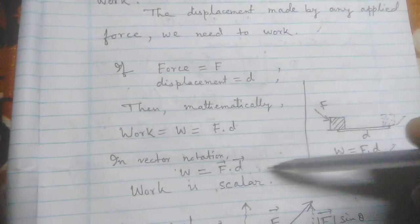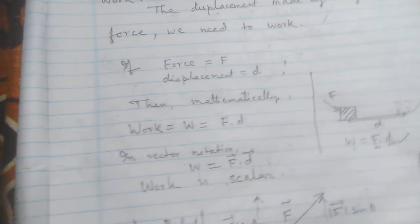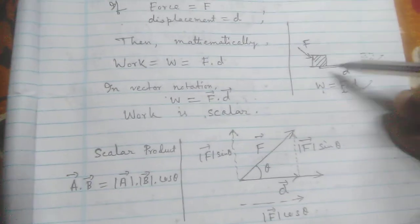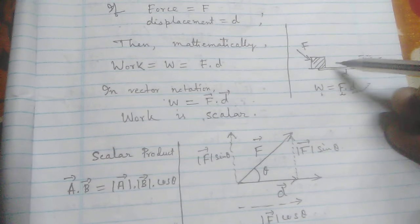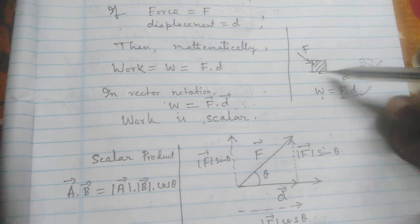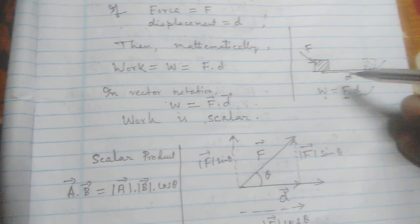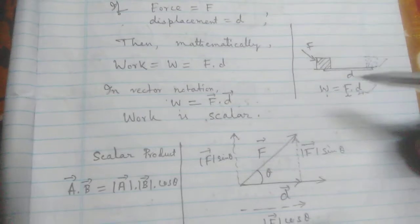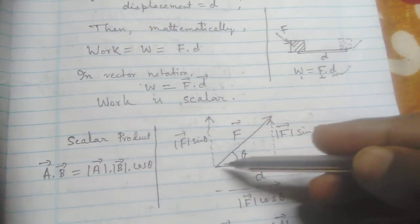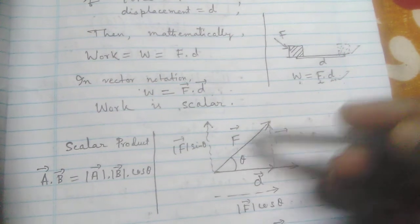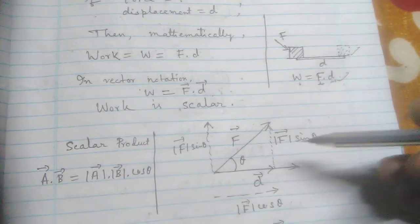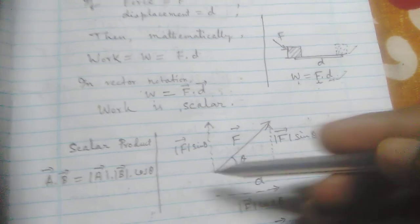but no direction. So work is scalar. Now if we have any angle between the applied force and the distance, then what will be the calculated work? So now look at this figure. Here the distance and applied force have an angle theta. So how can we calculate the work?